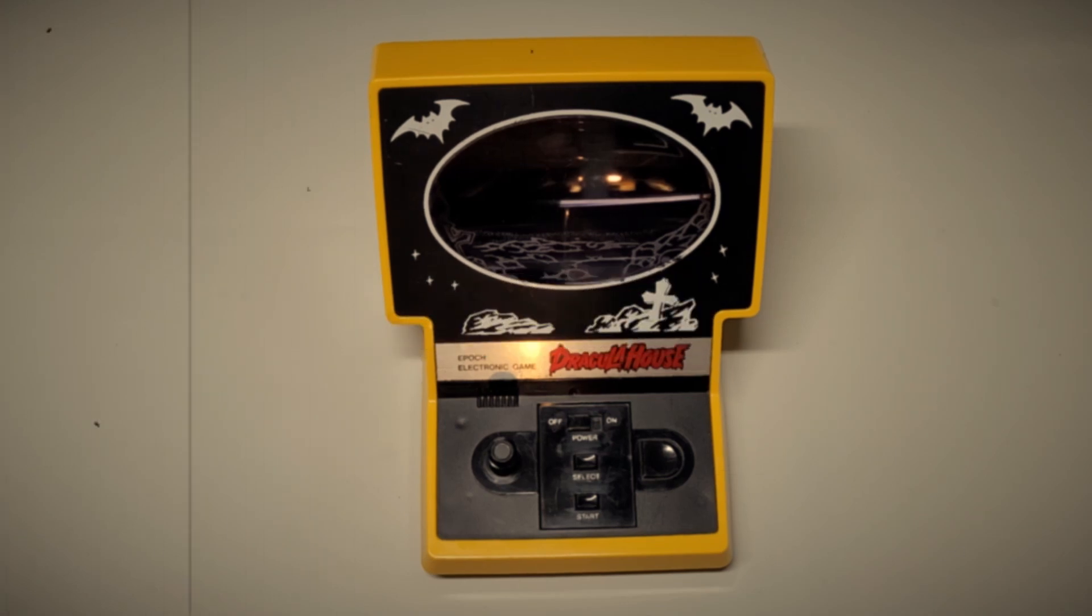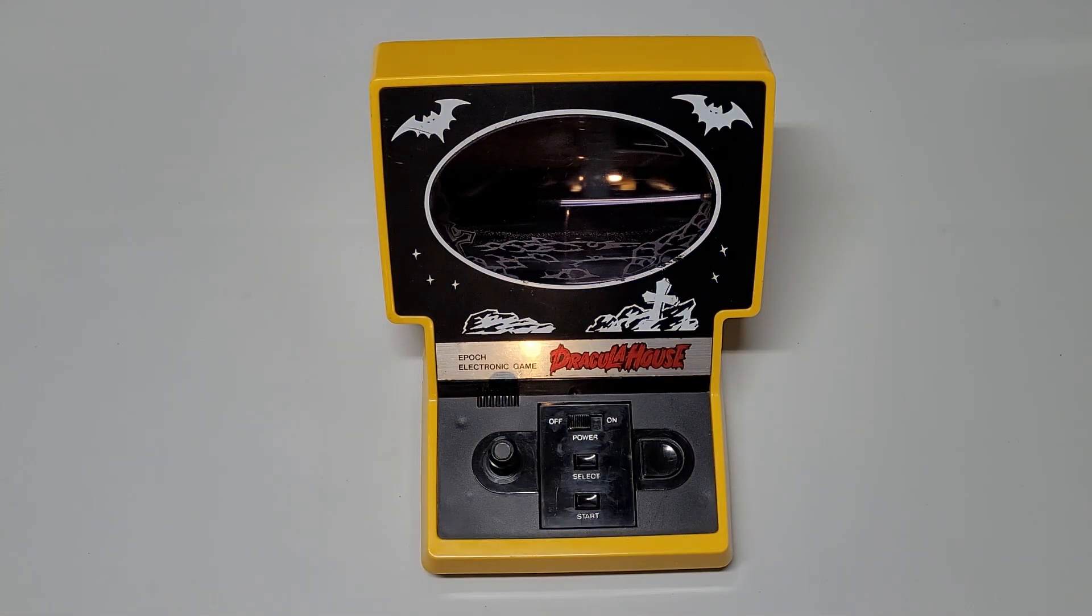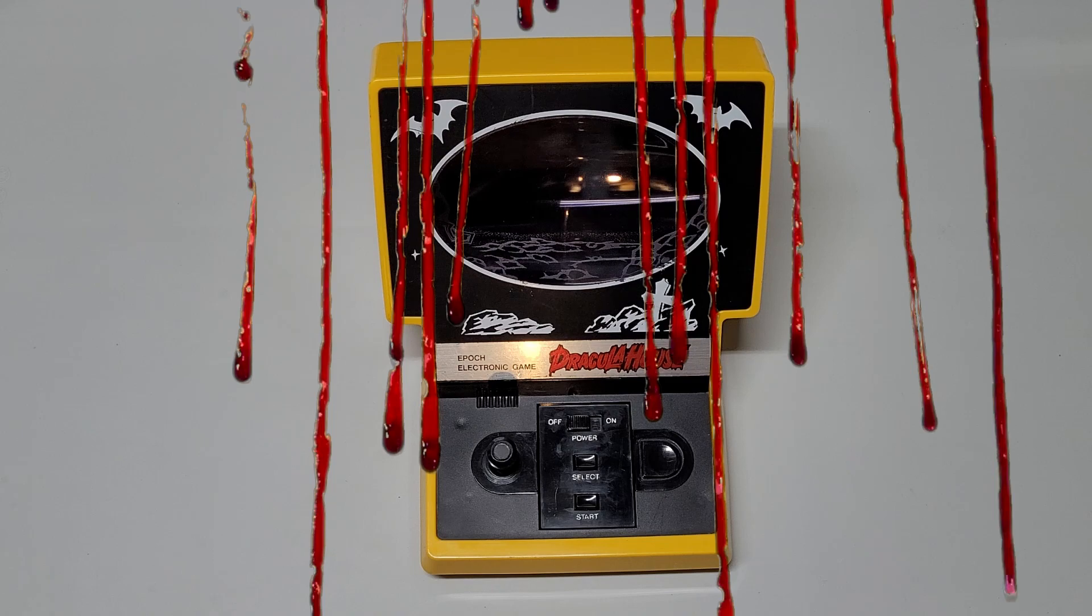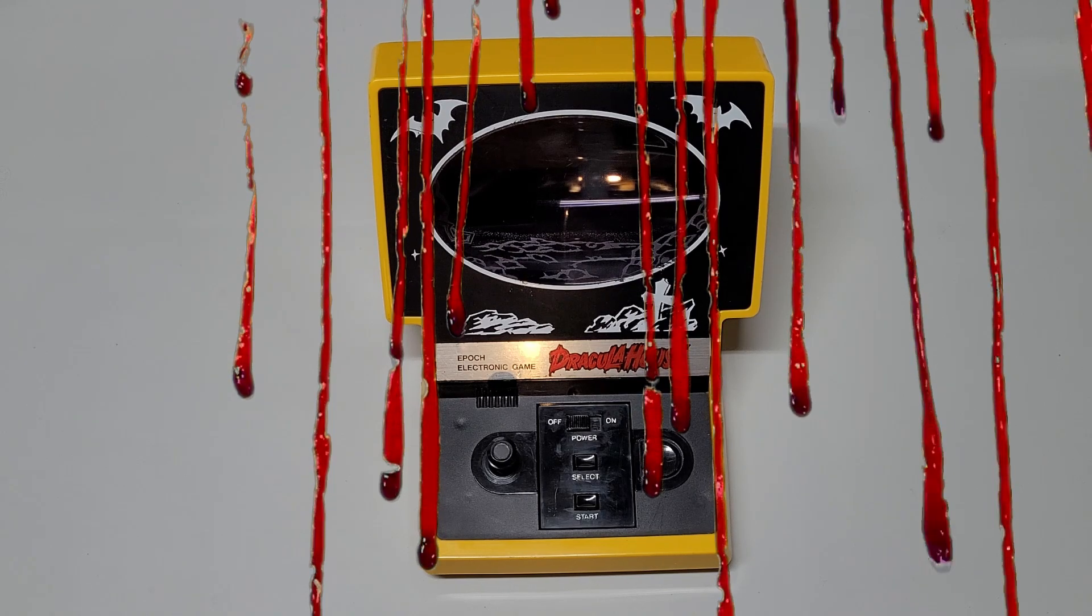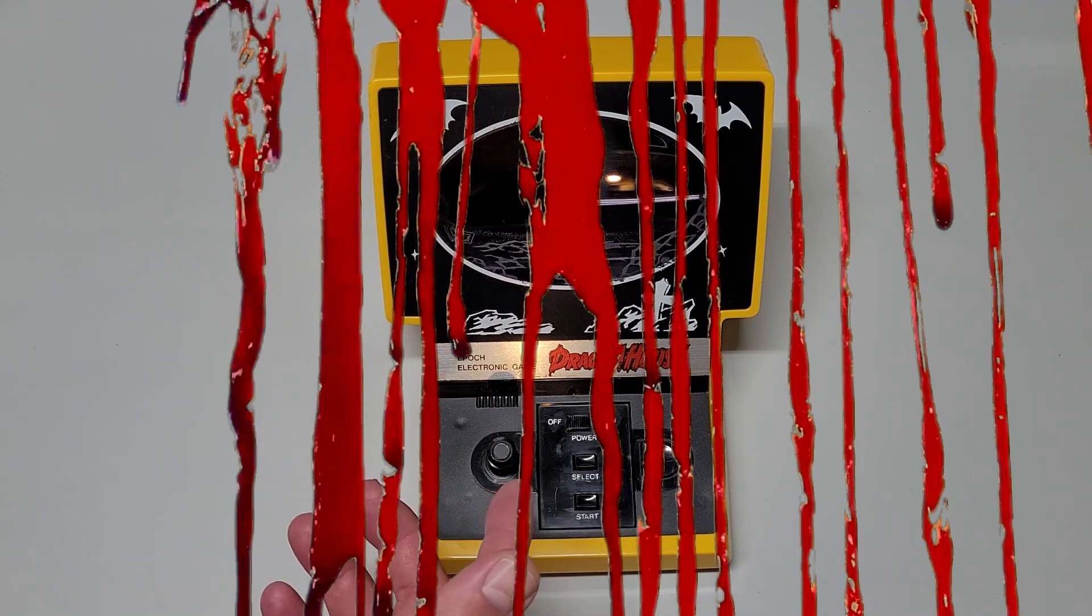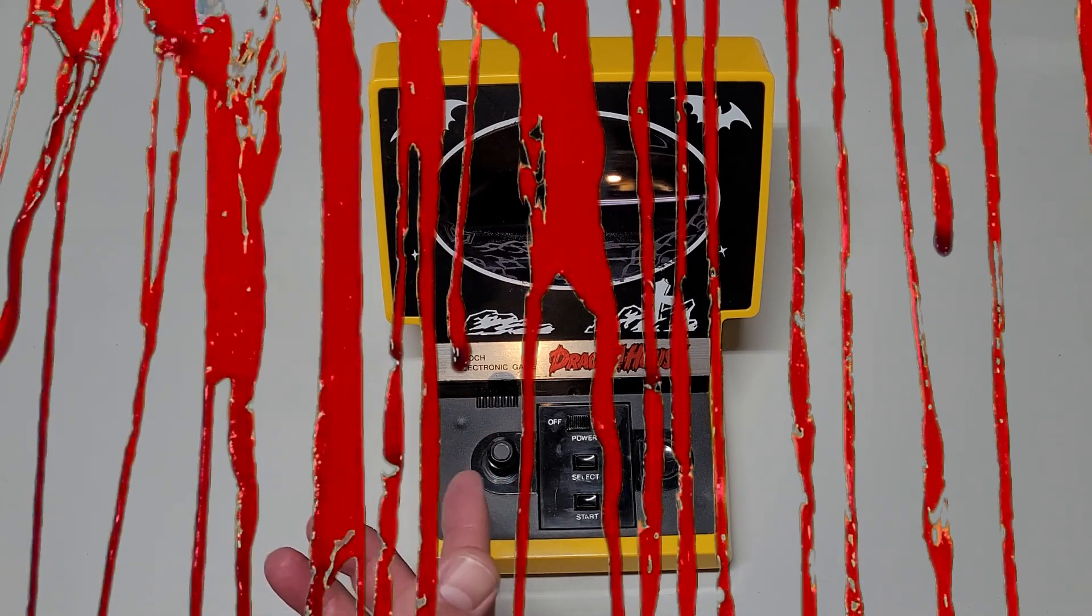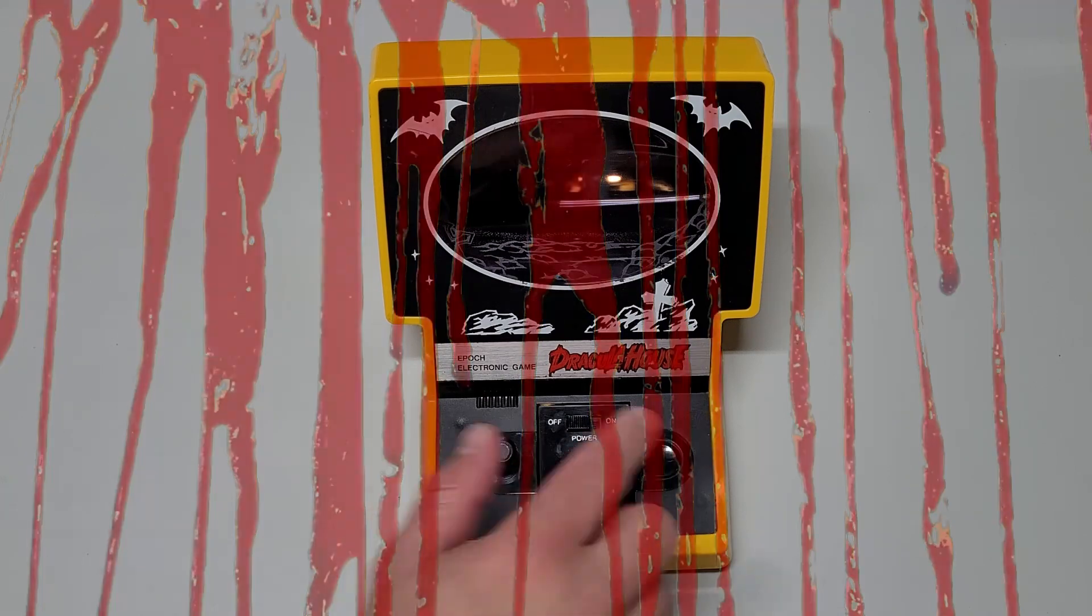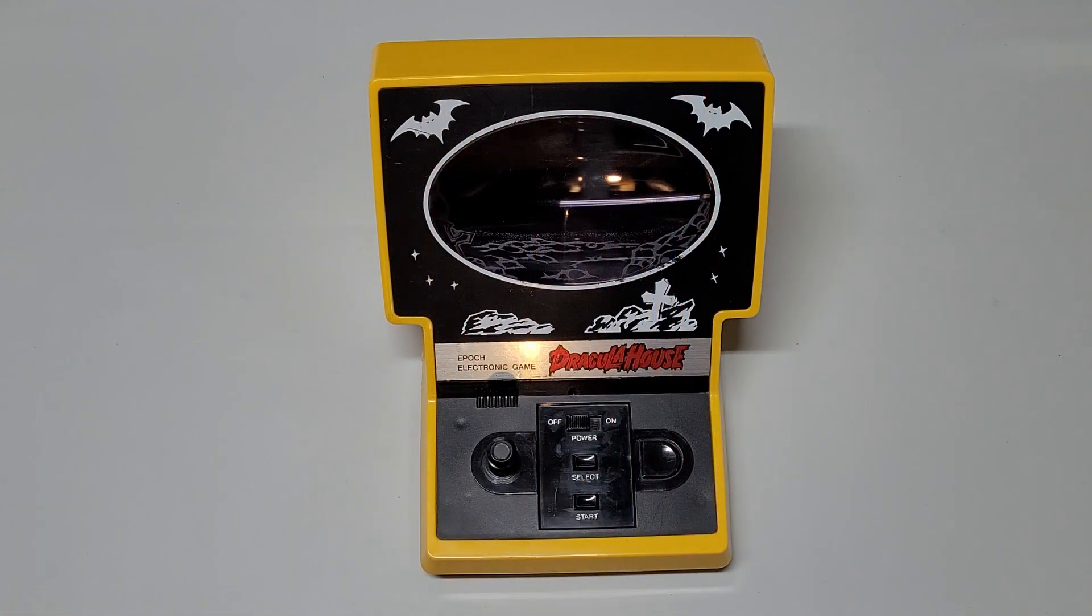It would only be appropriate to have today's video be FX Dracula House. This game came out in 1982 and there were a couple different versions produced. The blood red one is simply called Dracula and was sold in the United States. The yellow one I have here was sold in Japan and called Dracula House in blood red. Same game but just different exterior.